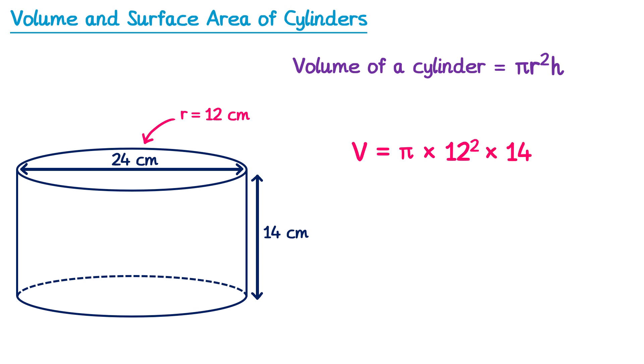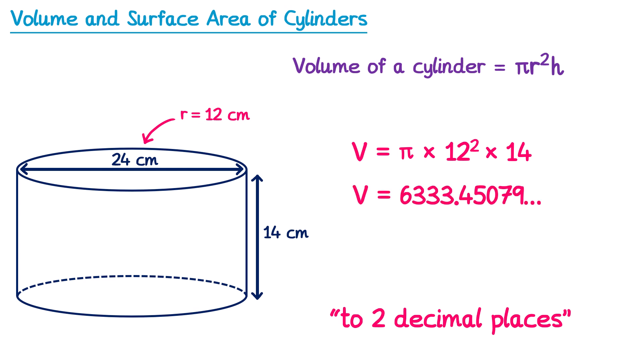Let's imagine this question said give your answer to two decimal places. So we would just type this into the calculator, and that rounded to two decimal places is 6333.45 centimeters cubed.